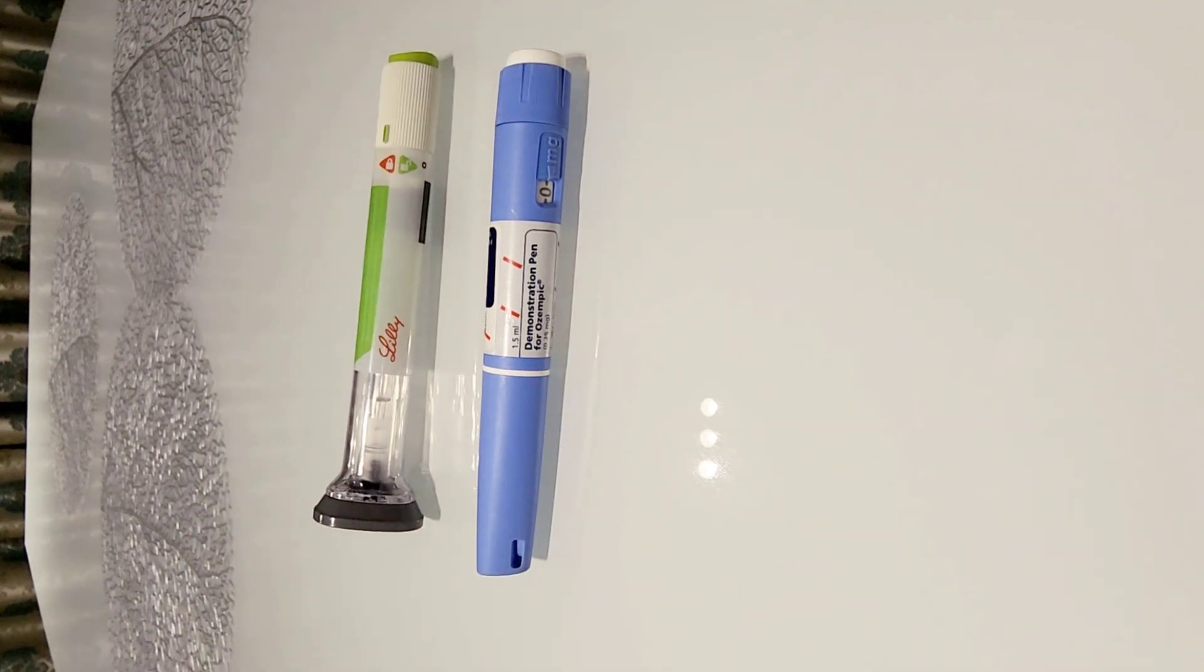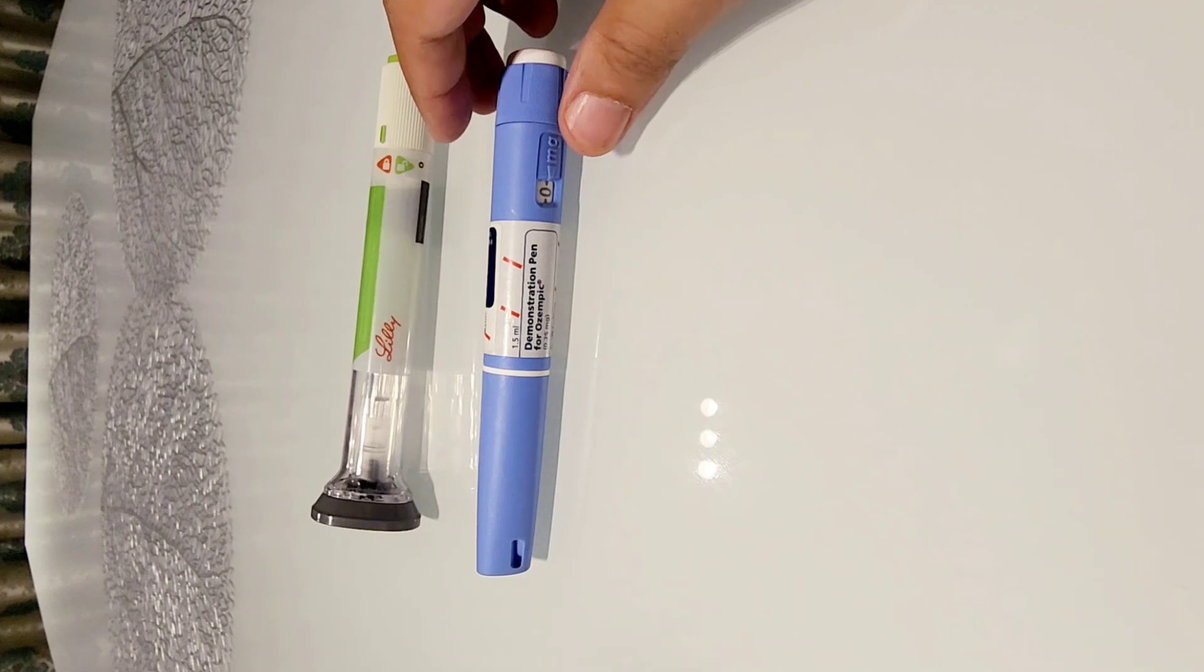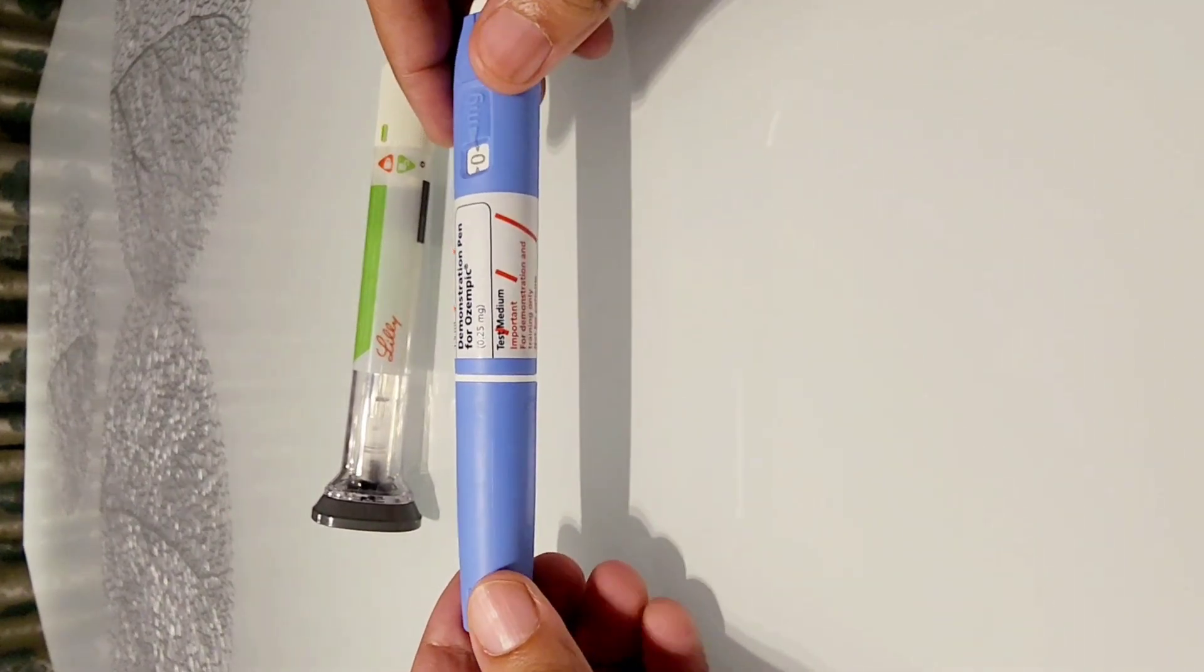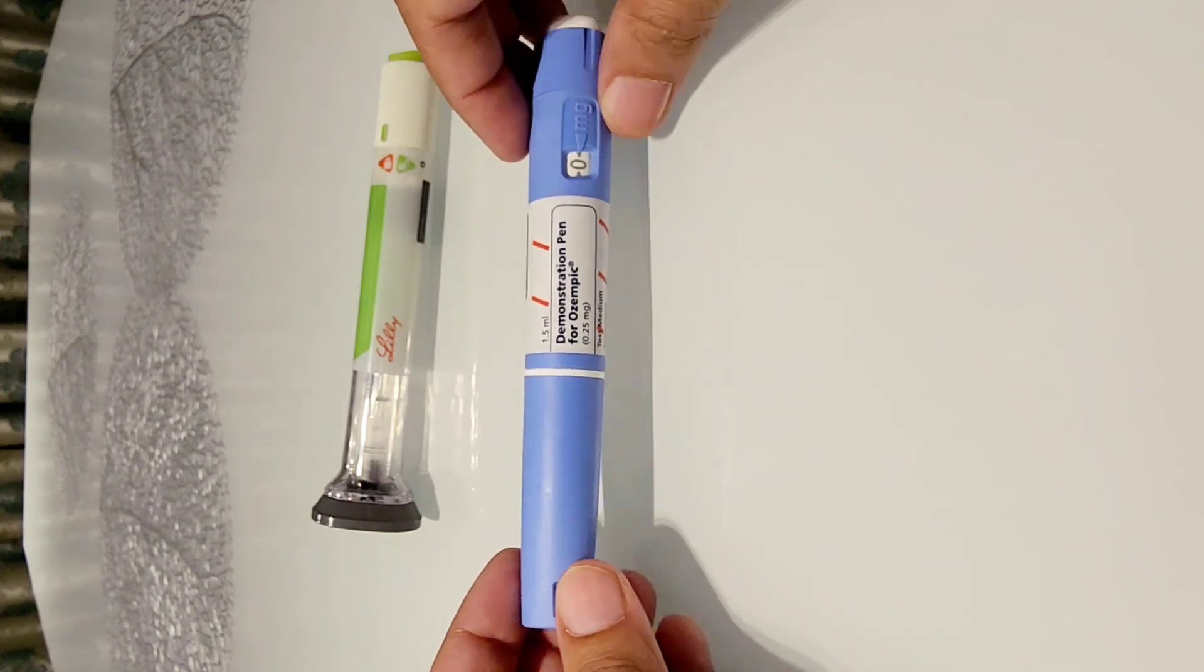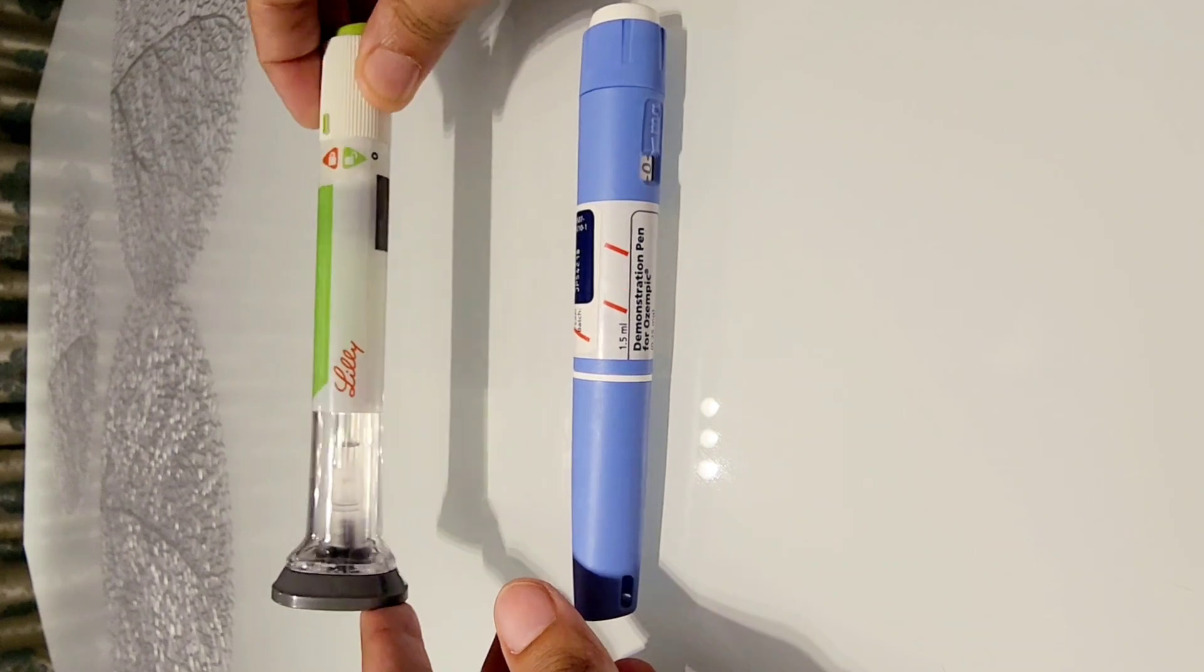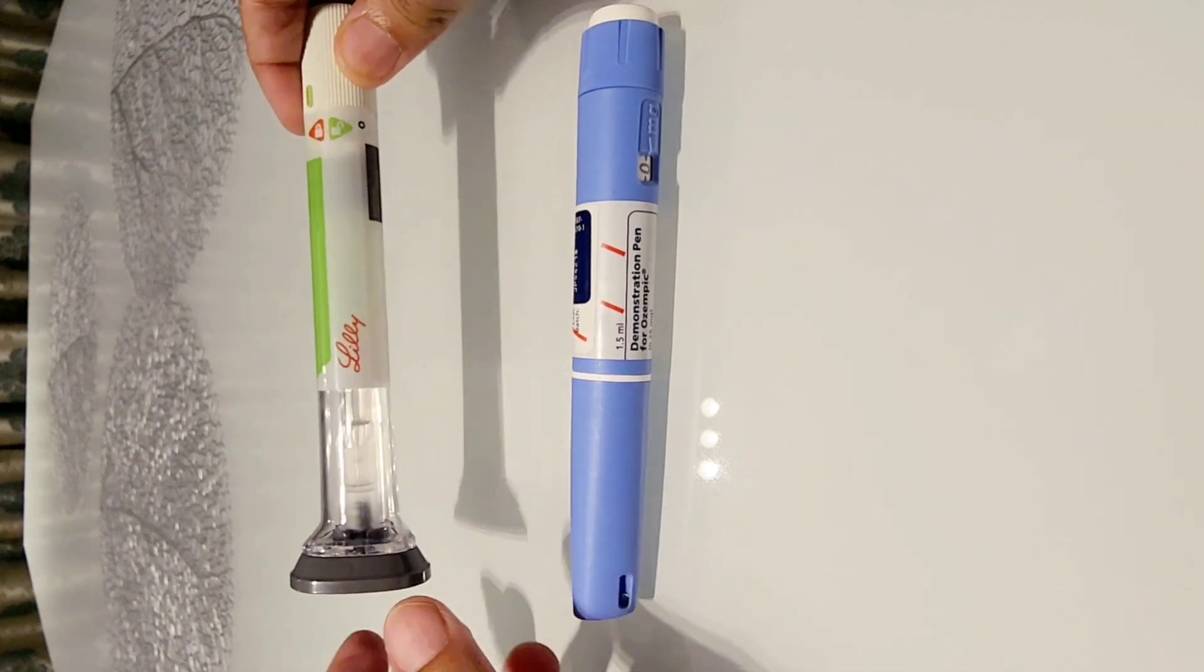Now the difference is quite significant because Ozempic will give you four dosages over a period of one month whereas Manjaro will give you just one dose per week and this is a single-use disposable pen device.